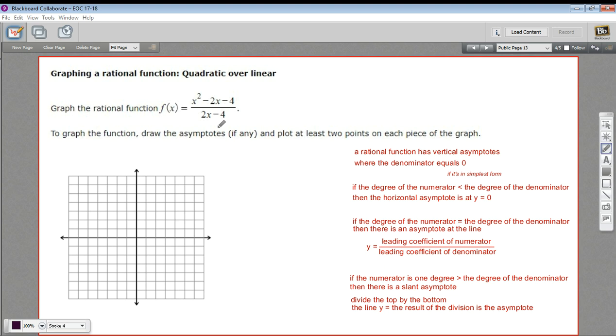The first step in graphing any rational function is going to be to sketch in the asymptotes, those lines that the graph will never touch but will keep on approaching. So the vertical asymptote, usually the easiest, it's where the denominator of the rational function equals 0. So in this case, 2x minus 4, where that equals 0.